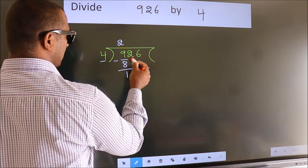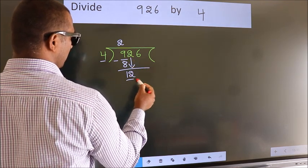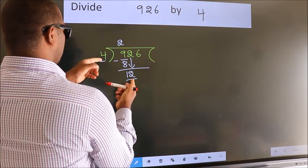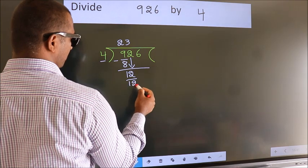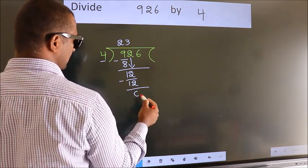After this, bring down the beside number, so 2 down. 12. When do we get 12? In the 4 table, 4 times 3 is 12. Now we subtract. We get 0.